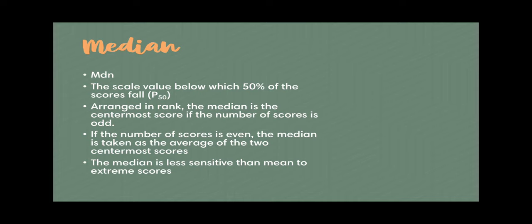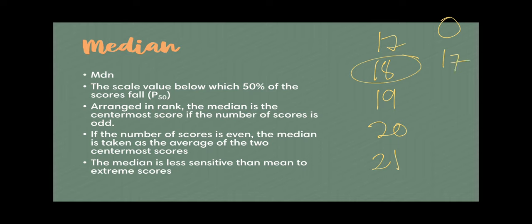If the number of scores is even, the median is taken as the average of the two centermost scores. The median is less sensitive than the mean to extreme scores. For example, if you have zero, sixteen, seventeen, eighteen, fifty-five, when you arrange them the median will still be eighteen — it's still the midway despite the distance of the highest and the lowest score. So median is usually a better way of looking at the convergence of scores when there are extreme values in a given data set.